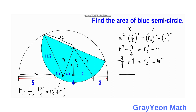Simplifying the right-hand side: −9/4 + 16/4 = 7/4. So r_S² − m² = 7/4.